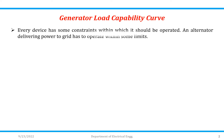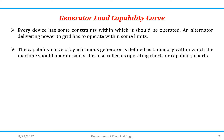Every device has some constraints within which it should be operated. An alternator delivering power to the grid has to be operated within some limits. The capability curve of a synchronous generator is nothing but a boundary within which the machine should operate safely. It is also called as operating chart or capability chart.